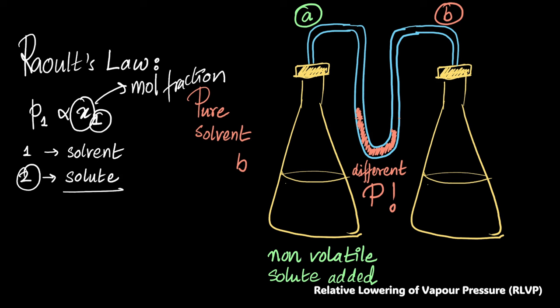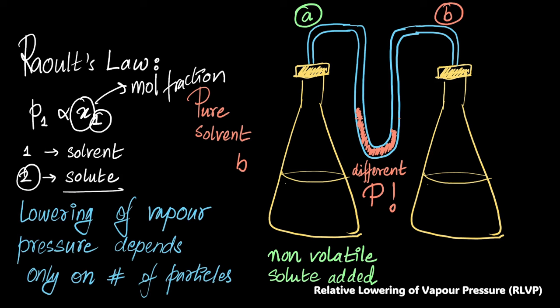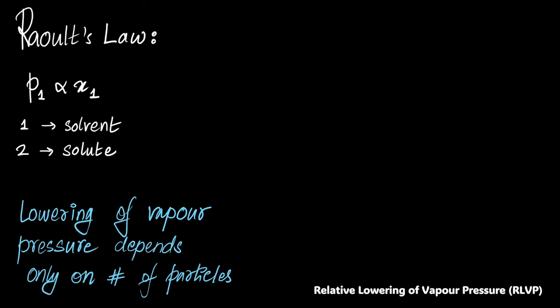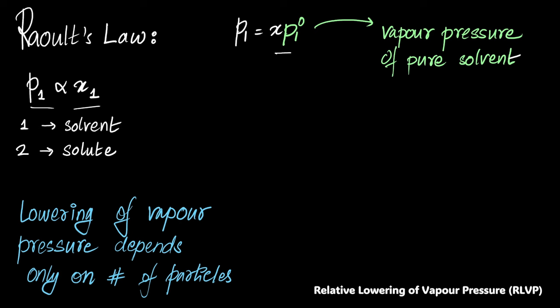This is something you are familiar with. So lowering of vapor pressure is not a big deal. But I am making a bold statement over here. I am saying that it only depends on number of particles. So I can write this, the proportionality constant to be the vapor pressure of your solvent at a particular temperature, at a temperature T, right? That's important. It's at a particular temperature.